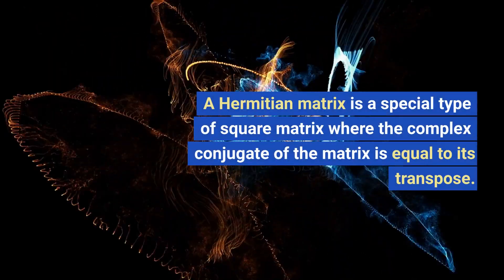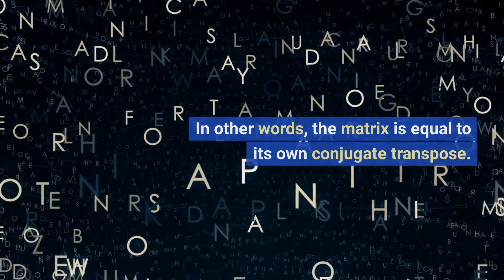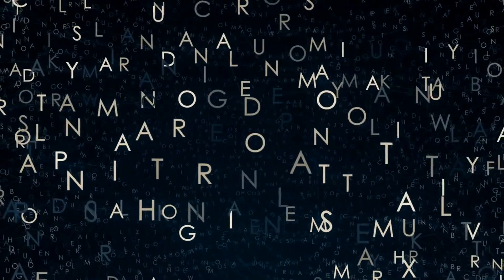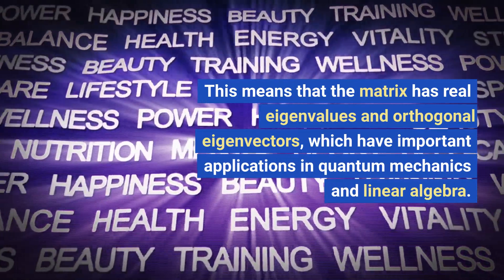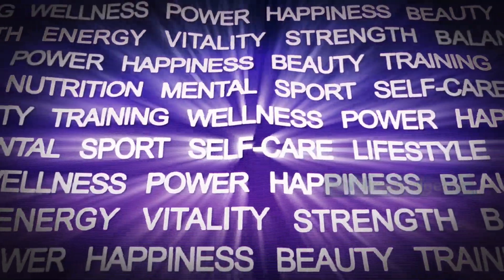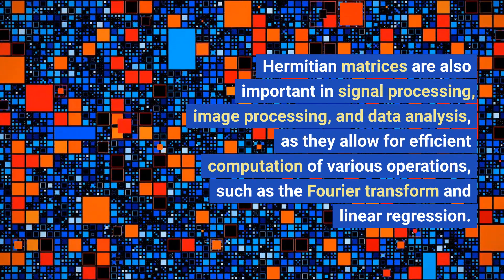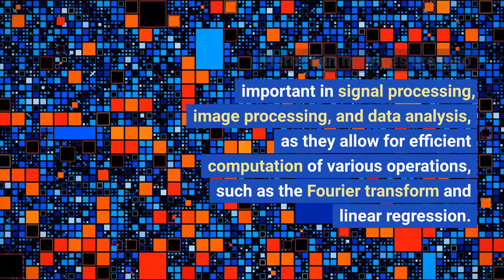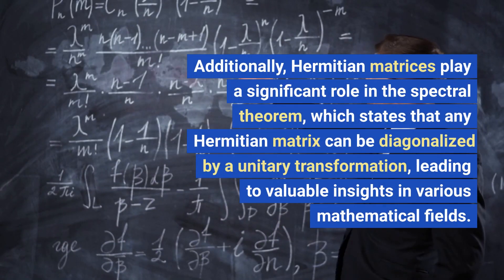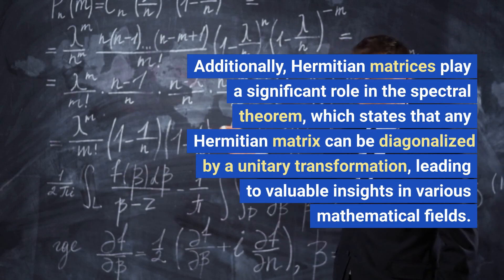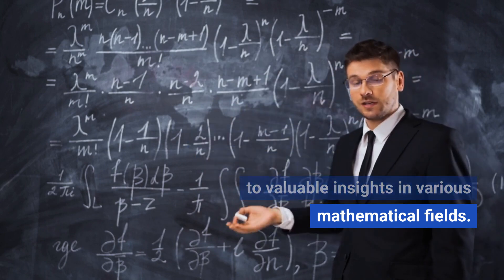A Hermitian matrix is a special type of square matrix where the complex conjugate of the matrix is equal to its transpose. In other words, the matrix is equal to its own conjugate transpose. This means that the matrix has real eigenvalues and orthogonal eigenvectors, which have important applications in quantum mechanics and linear algebra. Hermitian matrices are also important in signal processing, image processing, and data analysis, as they allow for efficient computation of operations such as the Fourier transform and linear regression. Additionally, Hermitian matrices play a significant role in the spectral theorem, which states that any Hermitian matrix can be diagonalized by a unitary transformation.